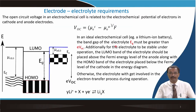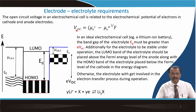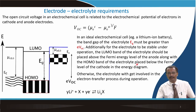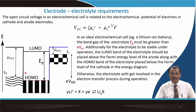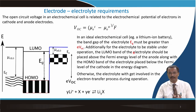The open circuit voltage is the difference of the chemical potential of electrons in the cathode and anode, divided by the Faraday constant. The cathode is shown on the left-hand side and the anode on the right-hand side. For an ideal electrochemical cell such as a lithium-ion battery, the band gap of the electrode, E_g, must be greater than E times V_OC. Since F equals E times Avogadro's number, you can cross-multiply and consider one mole of the electroactive material.